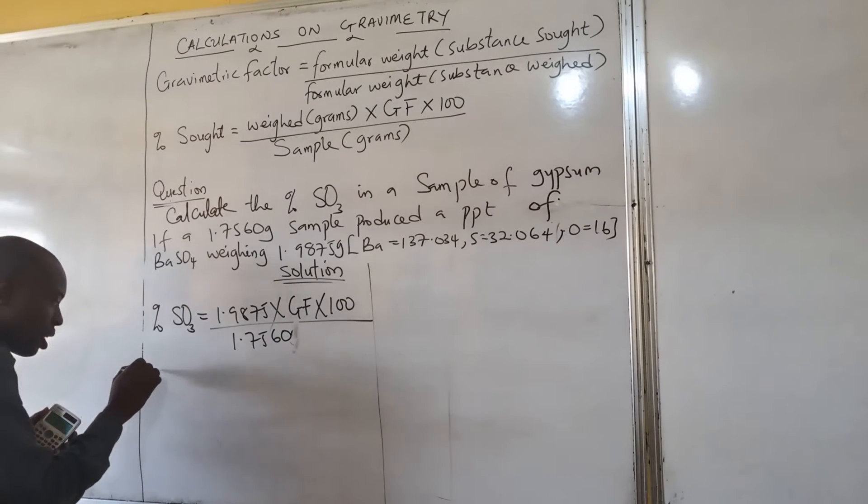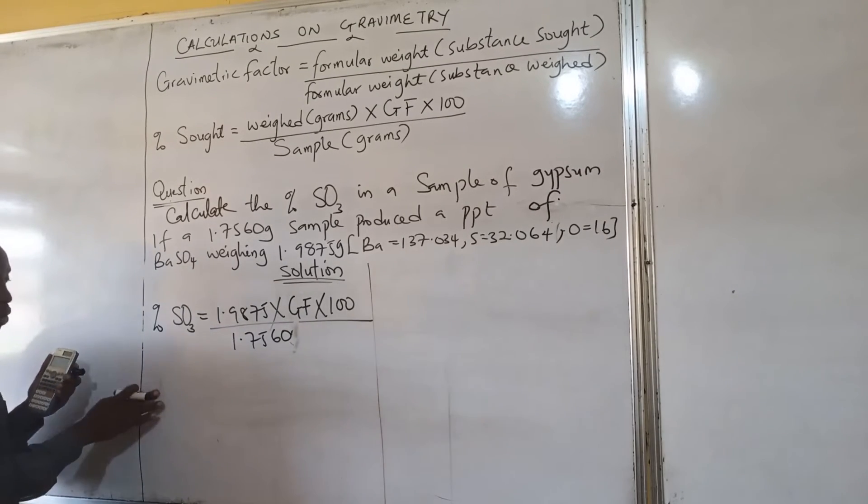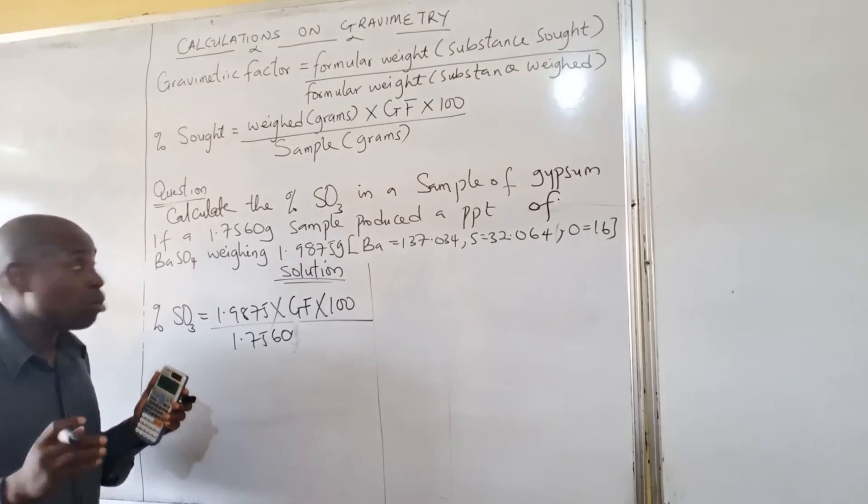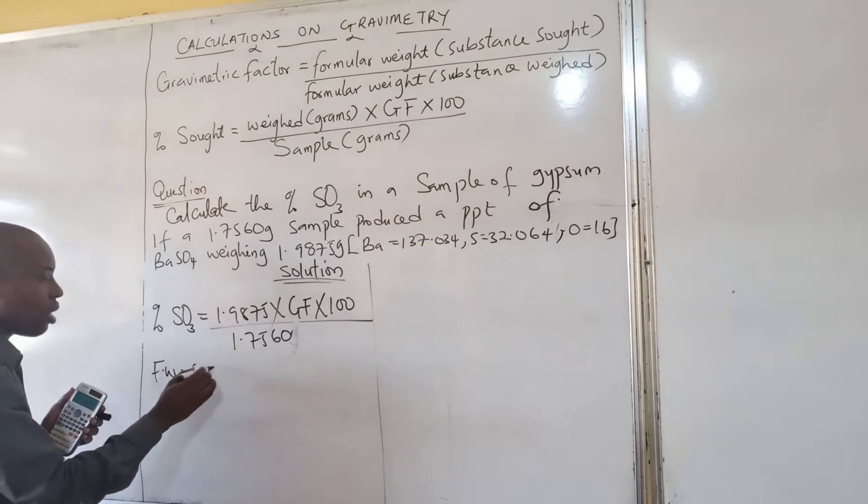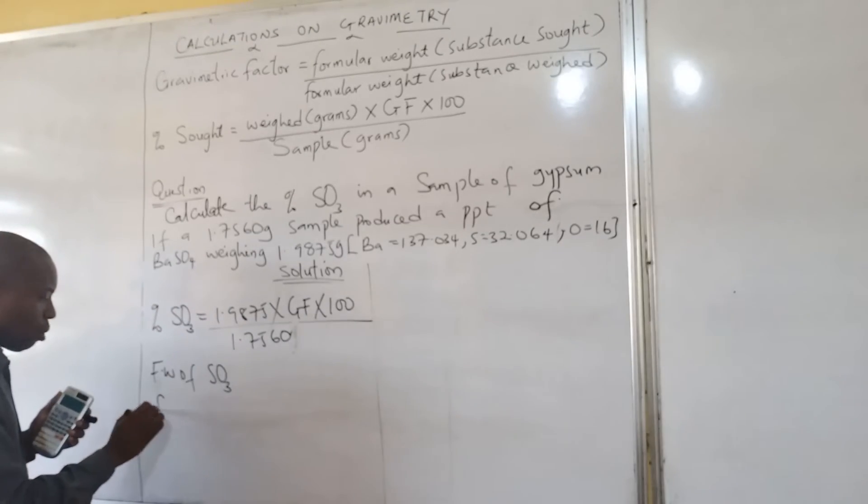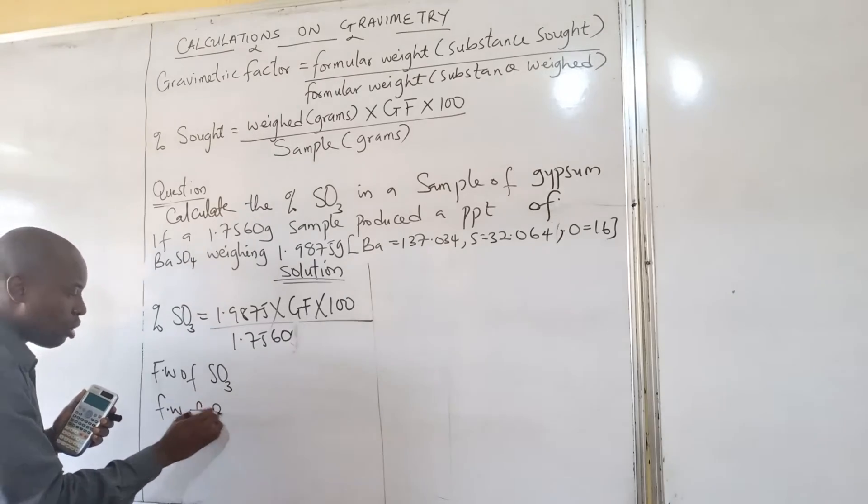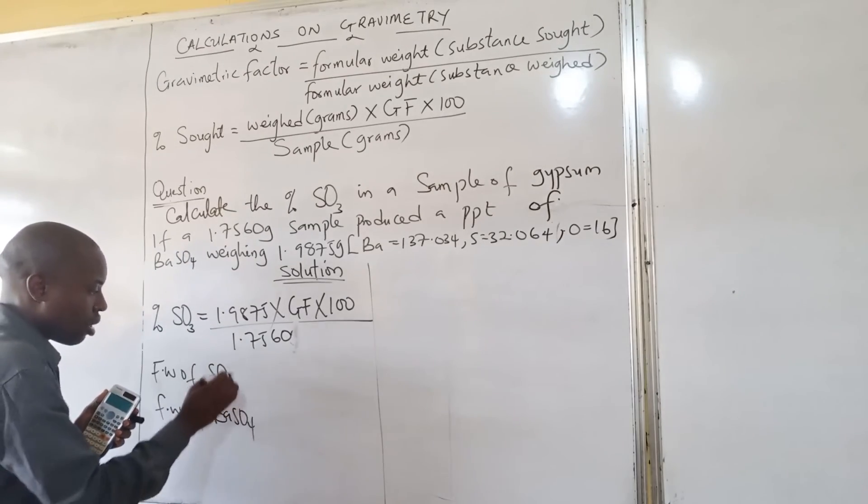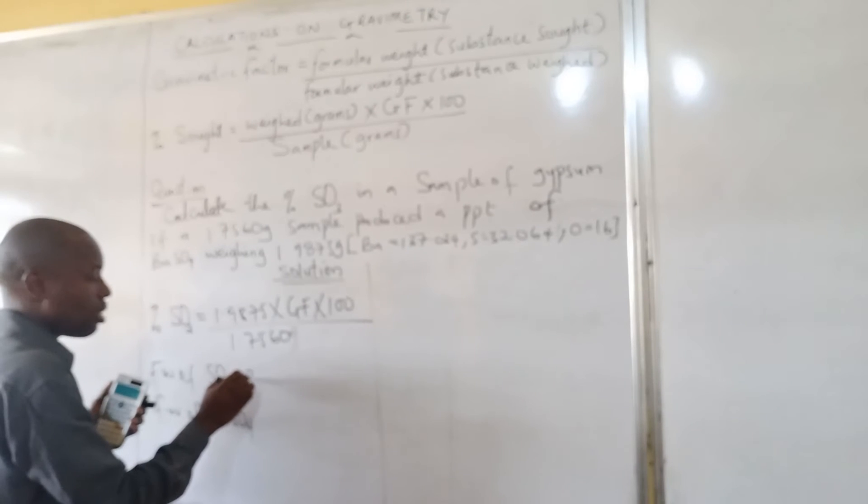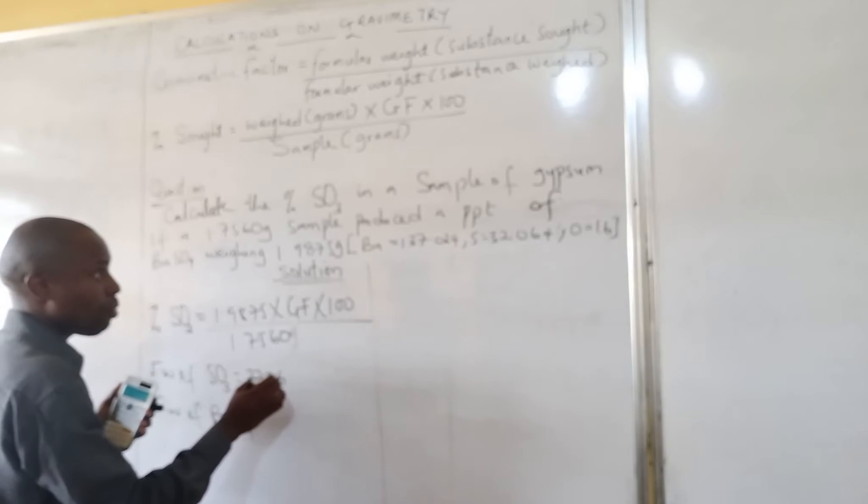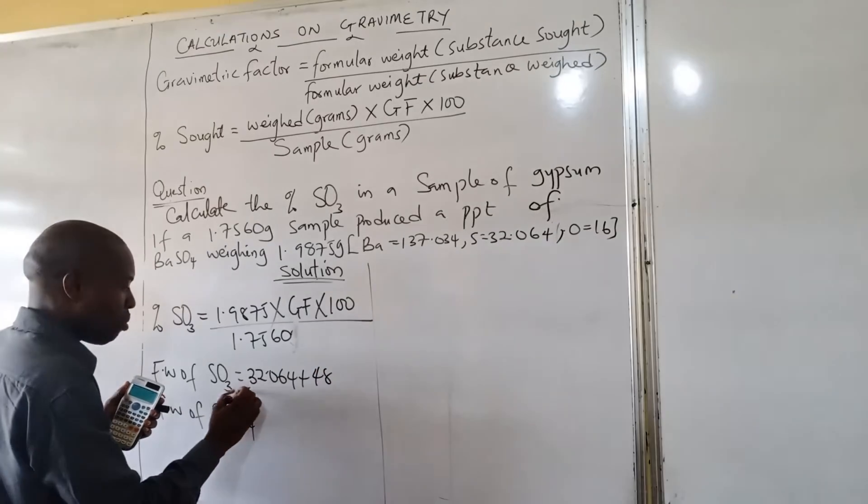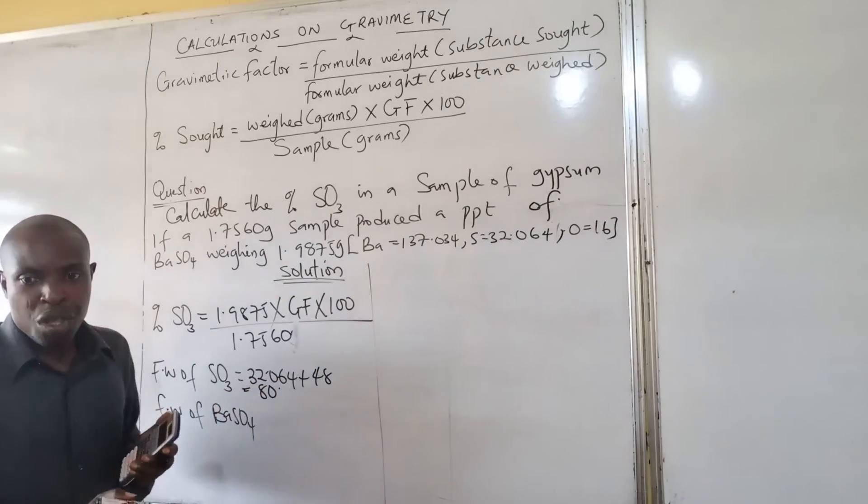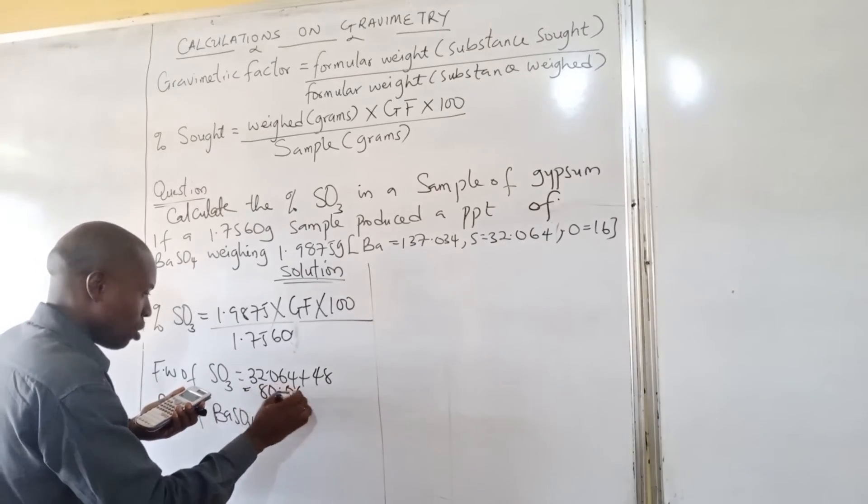Now we move straightway to the gravimetry factor. Before we consider the gravimetry factor, we must know how to calculate the molar mass or formula weight of SO₃ and also the formula weight of the barium sulfate. Here, the sulfur is 32.064 plus 3 times 16, which is 48, and give me 80.064.